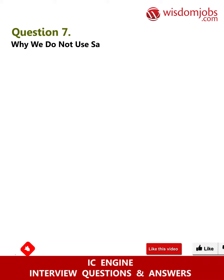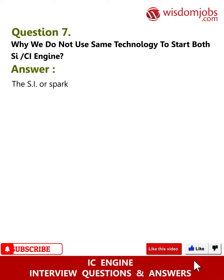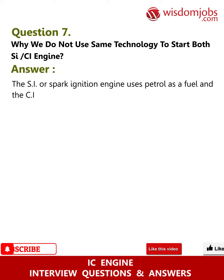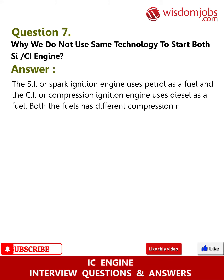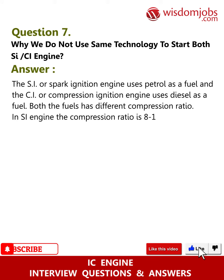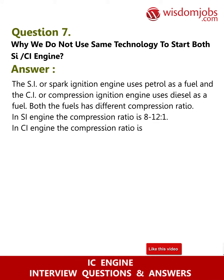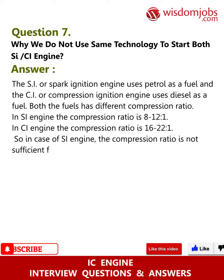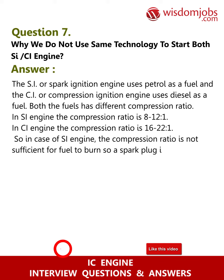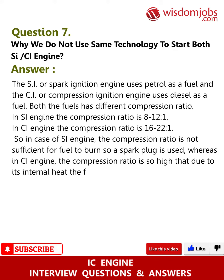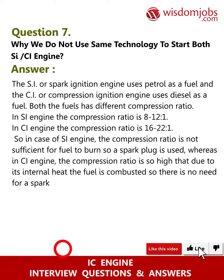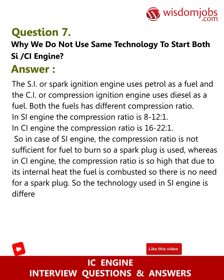Question 7: Why do we not use the same technology to start both SI and CI engines? The SI (spark ignition) engine uses petrol as a fuel and the CI (compression ignition) engine uses diesel as a fuel. Both fuels have different compression ratios — in the SI engine the compression ratio is 8:1 to 12:1, while in the CI engine it is 16:1 to 22:1. In the SI engine the compression ratio is not sufficient for the fuel to burn, so a spark plug is used, whereas in the CI engine the compression ratio is so high that due to the internal heat the fuel is combusted, so there is no need for a spark plug. Thus the technology used in the SI engine is different from the CI engine.